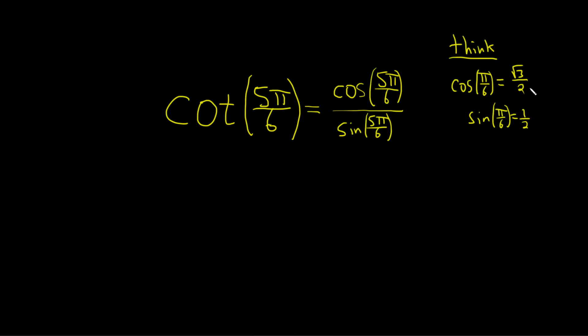Now we need to figure out whether our signs are correct. The trig function values of an angle and its reference angle—π over 6 is the reference angle for 5π over 6—are the same, except for possibly the sign. We need to figure out which one of these is positive and which is negative for 5π over 6.